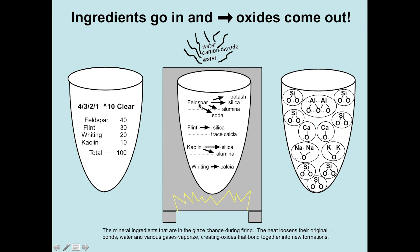During firing, the feldspar, the flint, kaolin, and whiting — the molecules separate out into their oxides. So you can see here's silica, here's some calcia, here's some alumina. We'll be studying the 12 oxides that are found in all of these ingredients in the recipes.